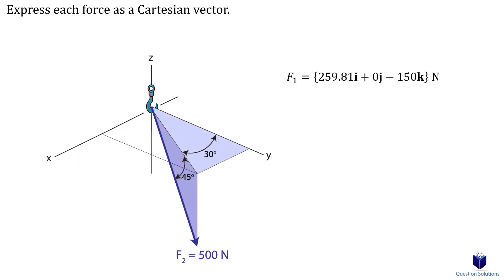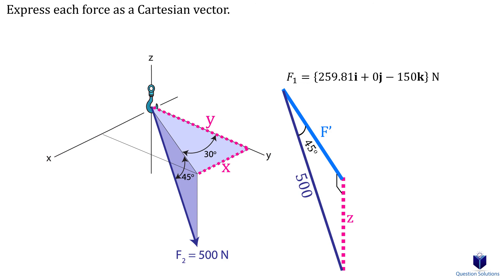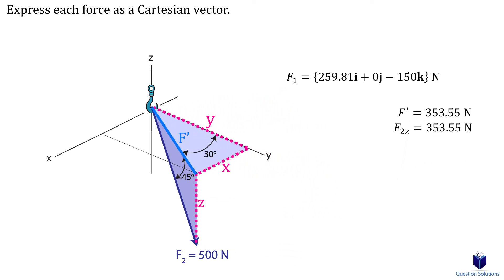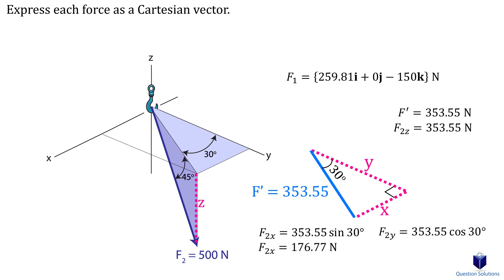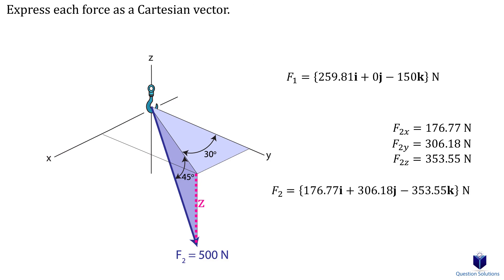For force F2, we draw each component — x, y, and z. The first step is to find F', the side shared by both triangles. Using cosine gives us F' as the adjacent length, and using sine gives us the Z component as the opposite side. Now using F', we can find the x and y components from the flat triangle — the x component is the opposite side so we use sine, and the y component is the adjacent length so we use cosine. Write these in cartesian vector form, remembering the Z component is along the negative Z axis and will be negative.